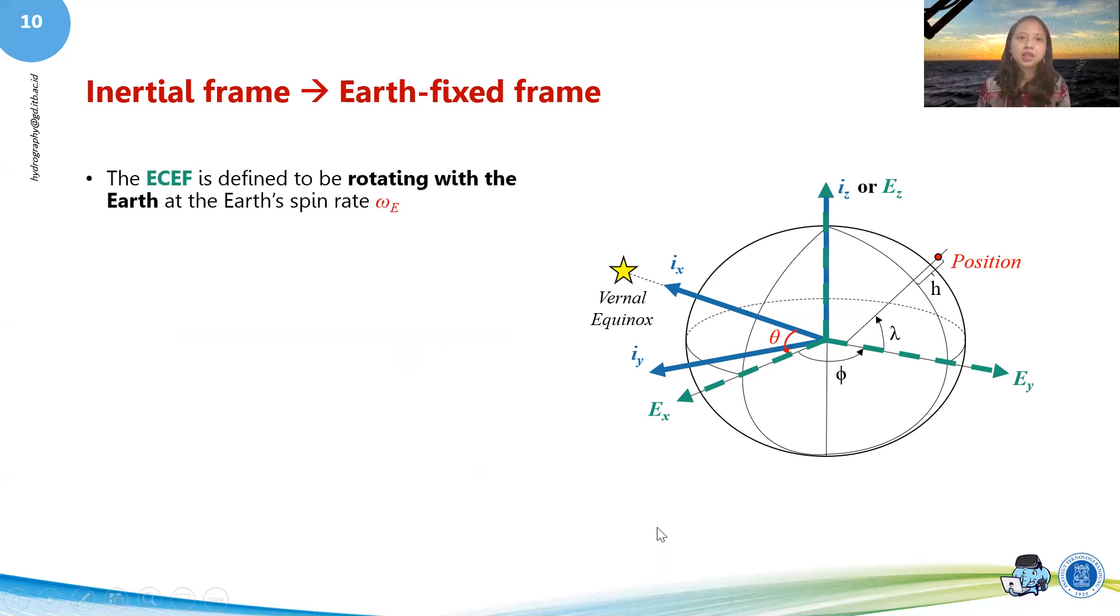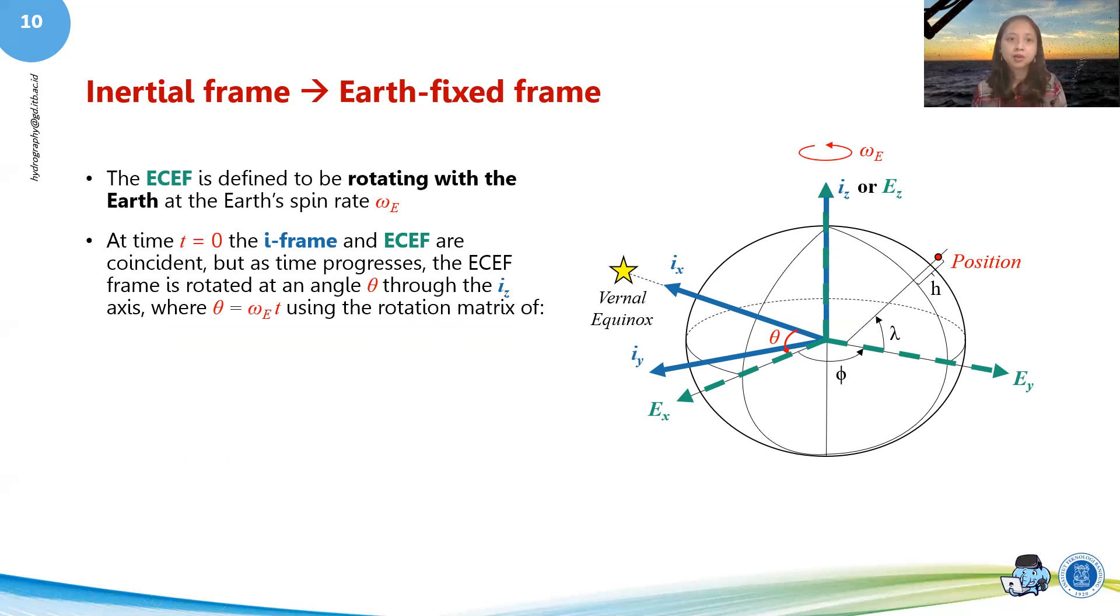So this is how you do it. So the ECEF frame is defined to be rotating with the Earth at Earth spin rate. So here, you've got your Earth spin rate of omega E. So at time T equals zero, I frame and ECEF, they're actually coincident. But as time progresses, it will be rotating. Because again, I frame does not rotate, but ECEF rotates with the Earth. So you've got your theta in here, and then basically your theta can be calculated with your T every single time. And then you've got the rotation of the Earth. Then when you've got your theta, basically you can transform all of your coordinates from the inertial system into the Earth-fixed frame using this rotation matrix.